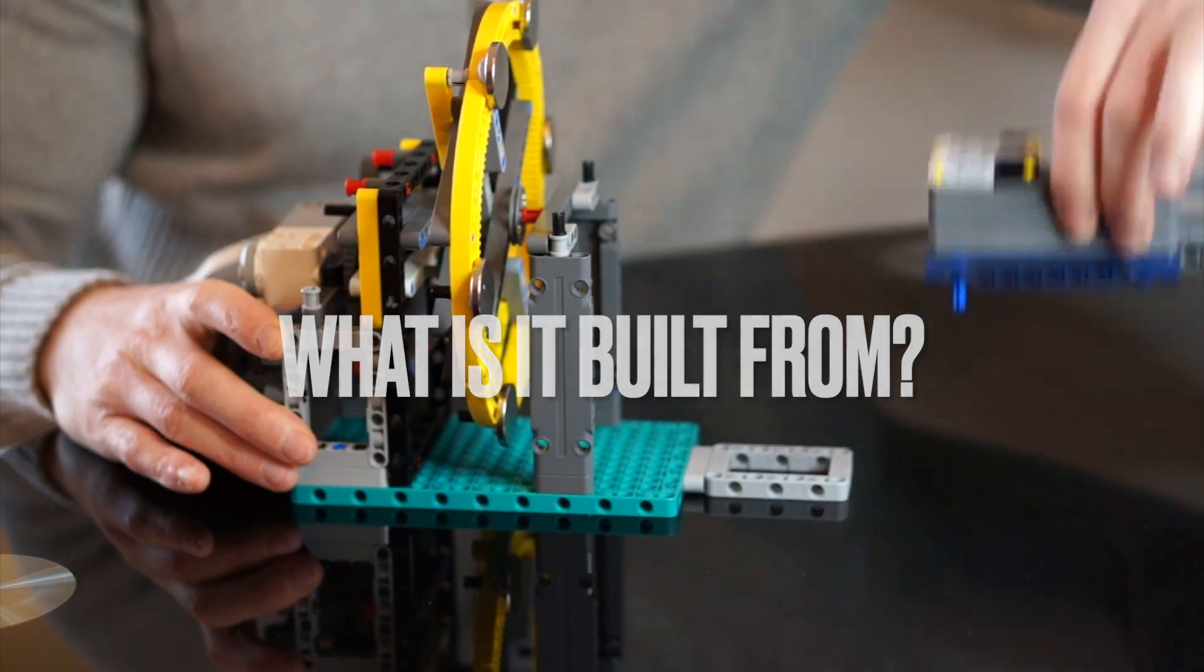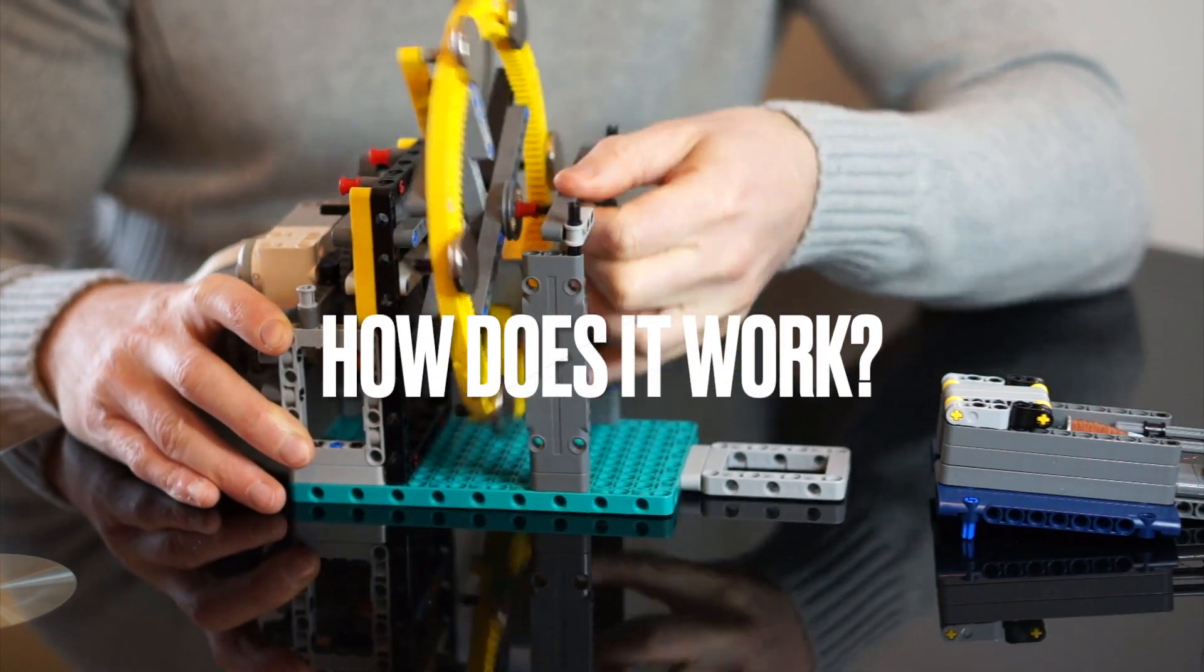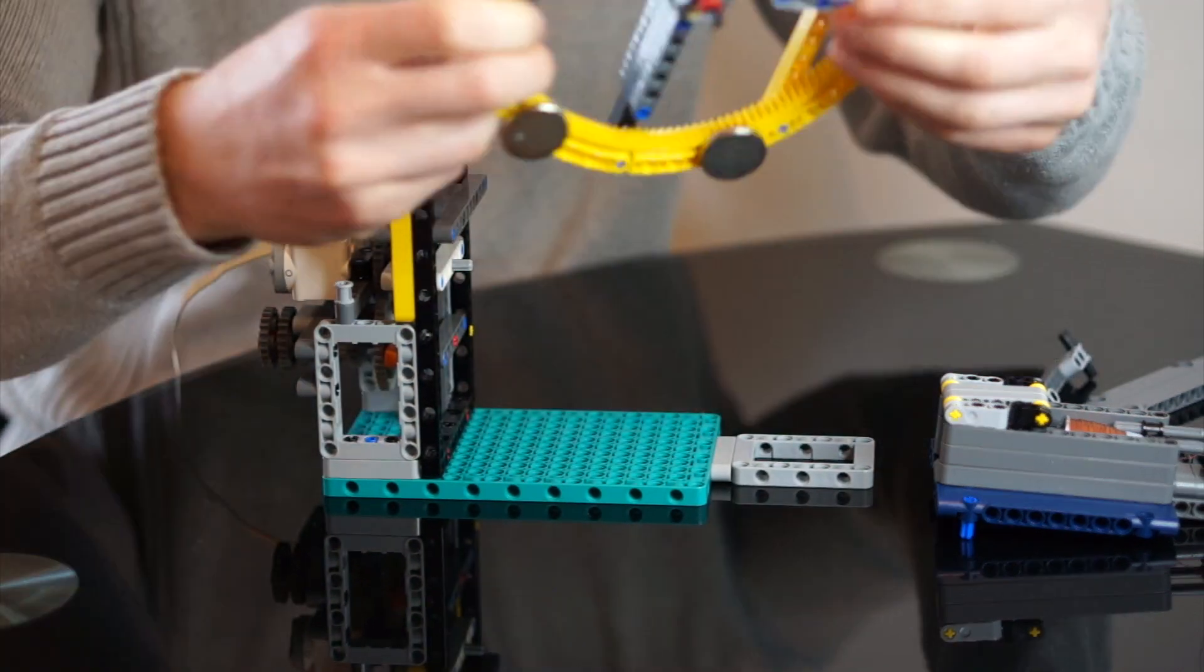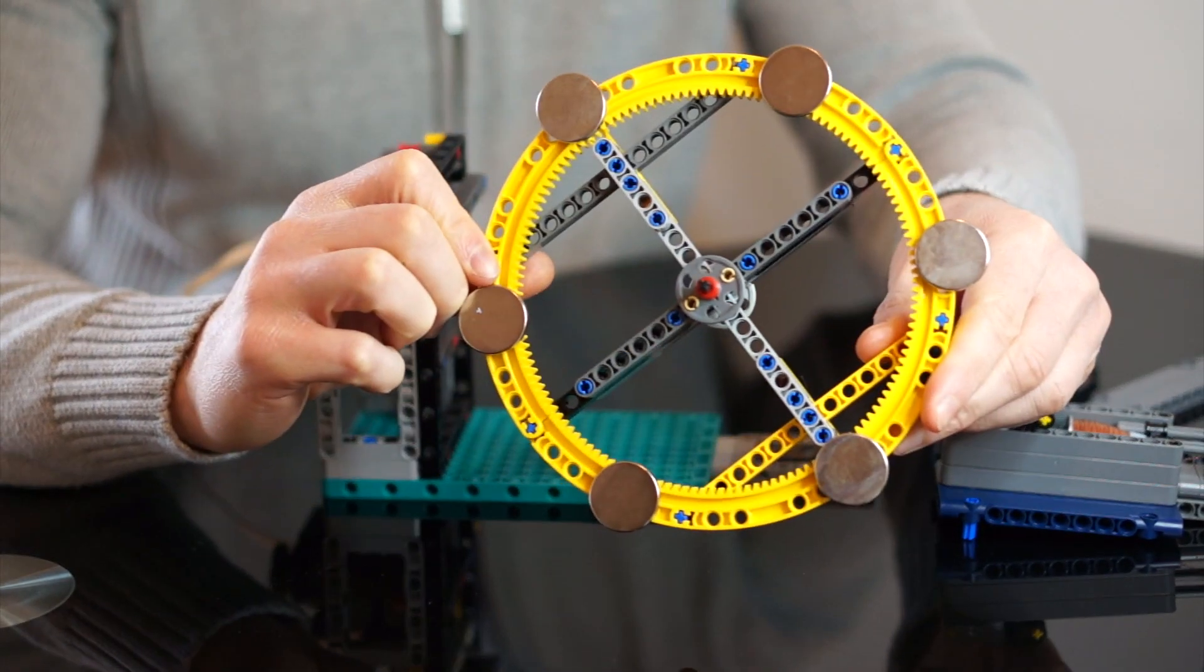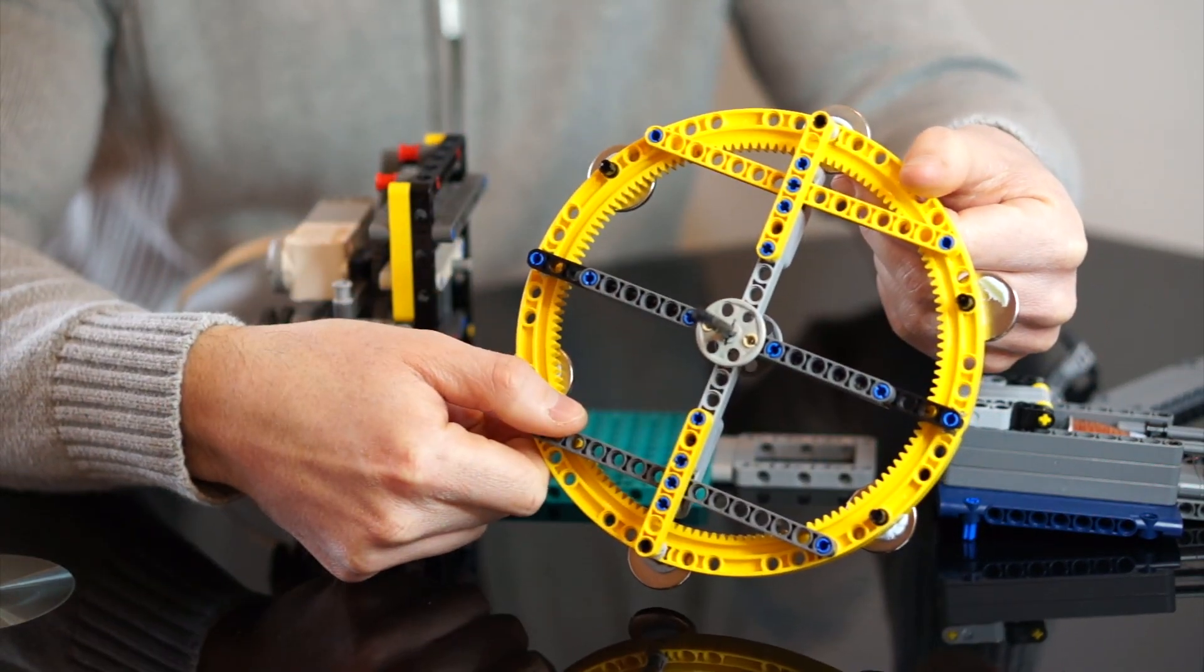So what is this generator built from and how does it work? Well let's start with the Lego structure. This is a simple flywheel made using four of the curved Technic gear racks.